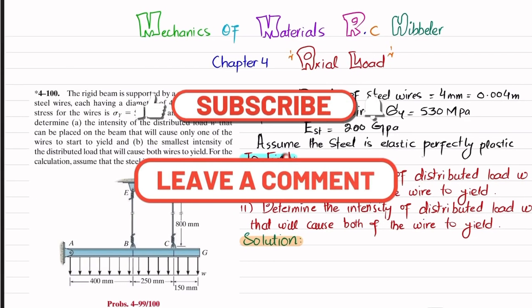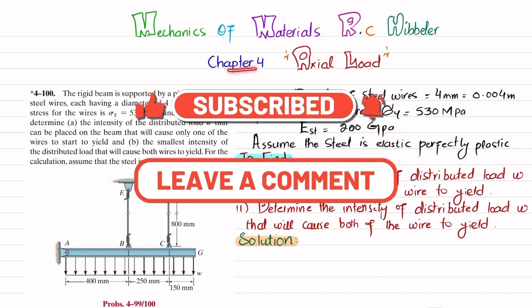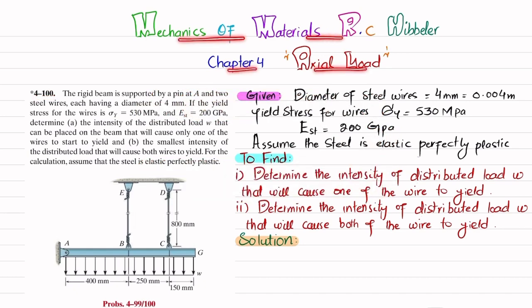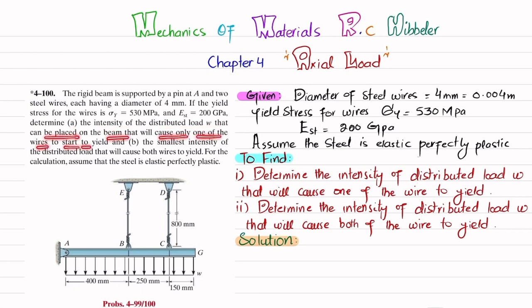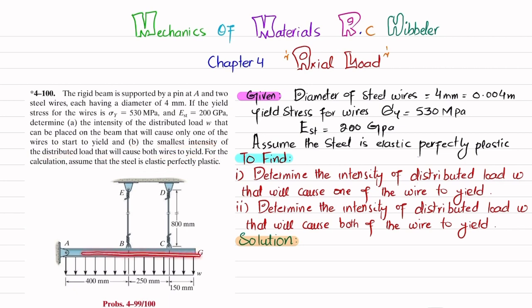Welcome back. In this video we are going to solve problem 4-100, taken from Chapter 4 (Axial Load) of Mechanics of Materials by RC Hibbeler. The statement is: the rigid beam is supported by a pin at A and two steel wires, each wire having a diameter of 4 mm. The yield stress for the wire is 530 MPa and the modulus of elasticity of steel is 200 GPa. We need to find: (a) the intensity of distributed load w that will cause only one wire to start yielding, and (b) the smallest intensity of distributed load that will cause both wires to yield. Assume steel is elastic-perfectly plastic.